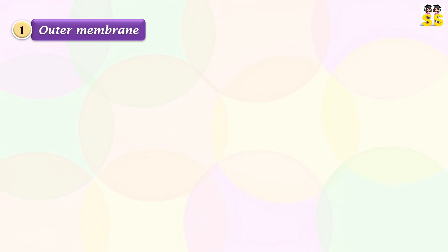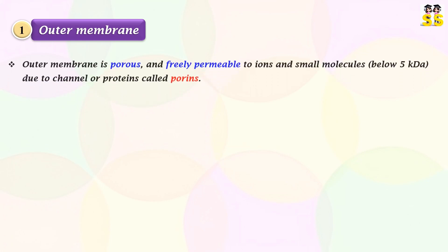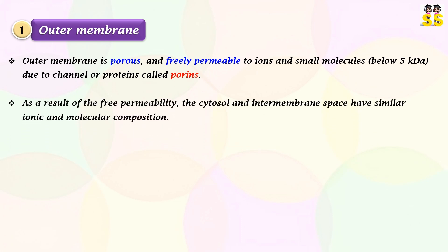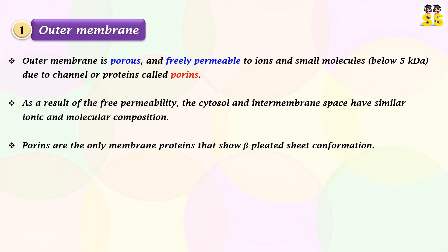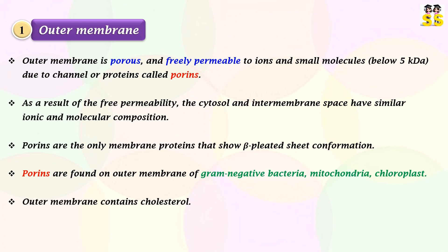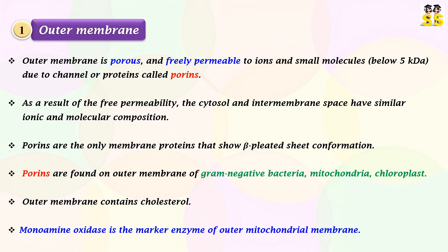Regarding the outer membrane: it is porous and freely permeable to ions and small molecules due to channel proteins called porins. As a result of the free permeability, the cytosol and intermembrane space have similar ionic and molecular composition. Porins are the only membrane proteins made up of beta-pleated sheet conformation. The outer membrane of gram-negative bacteria, mitochondria, and chloroplasts contains these porins. The outer membrane also contains cholesterol. Monoamine oxidase is the marker enzyme of the outer membrane.